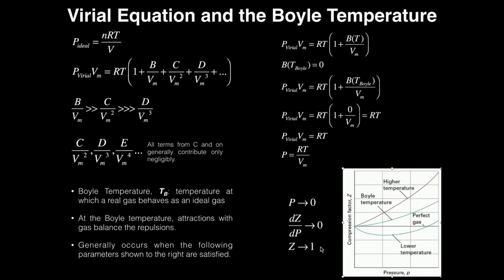But if your compression factor is one, that means you're dealing with an ideal gas. So this is another way to look at the Boyle temperature: it is typically achieved at low pressure, when the derivative of the compression factor with respect to pressure equals zero, and the compression factor goes to approximately one.